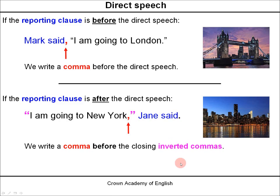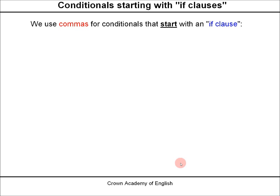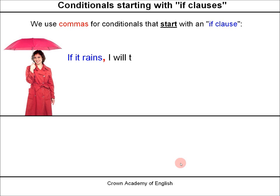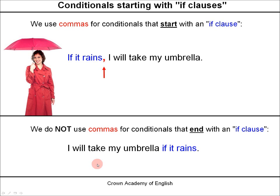Conditionals starting with IF clauses. We use commas for conditionals that start with an IF clause. Example: 'If it rains, I will take my umbrella.' We have an IF clause at the start of the sentence, therefore we must separate it with a comma. But we do not use commas for conditionals that end with an IF clause. So we can also say: 'I will take my umbrella if it rains.' This time the IF clause is at the end of the sentence and we do not write a comma.